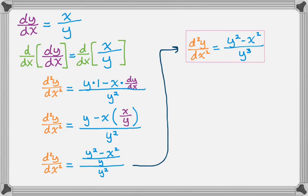And I've put a box around that, but I'm not actually done, because there's a little bit more that I can do here. So what I'm going to do is factor a negative out of the numerator to get negative quantity x squared minus y squared over y cubed.